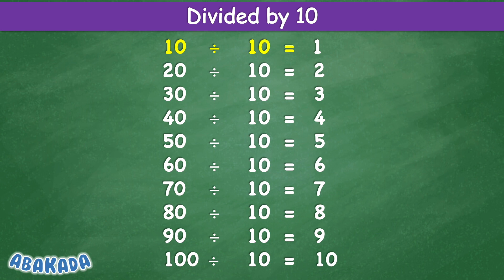Divided by 10: 10 divided by 10 equal 1, 20 divided by 10 equal 2, 30 divided by 10 equal 3, 40 divided by 10 equal 4, 50 divided by 10 equal 5, 60 divided by 10 equal 6, 70 divided by 10 equal 7, 80 divided by 10 equal 8, 90 divided by 10 equal 9, 100 divided by 10 equal 10.